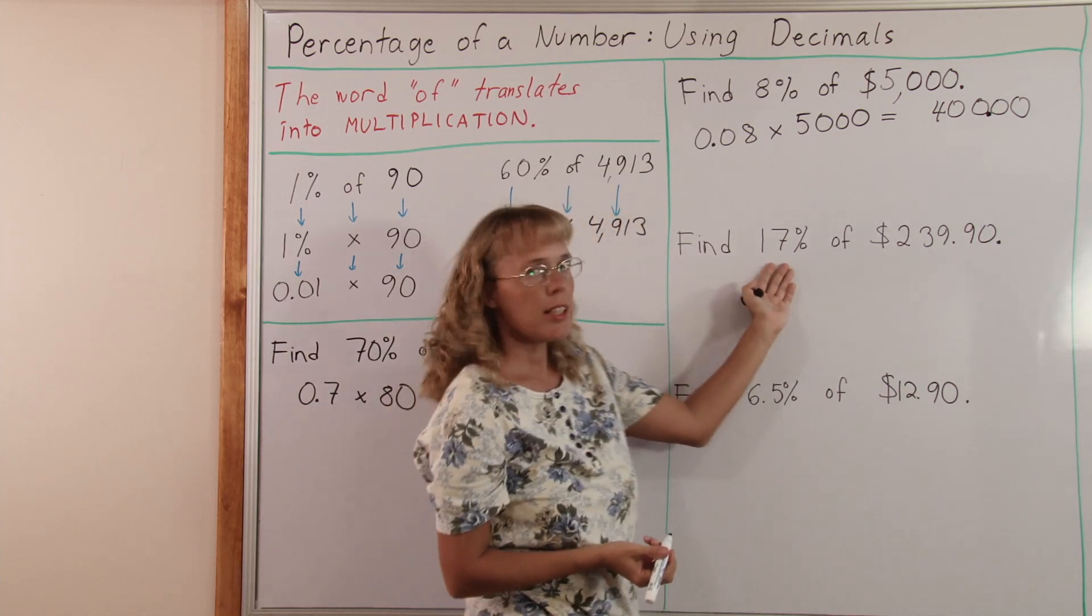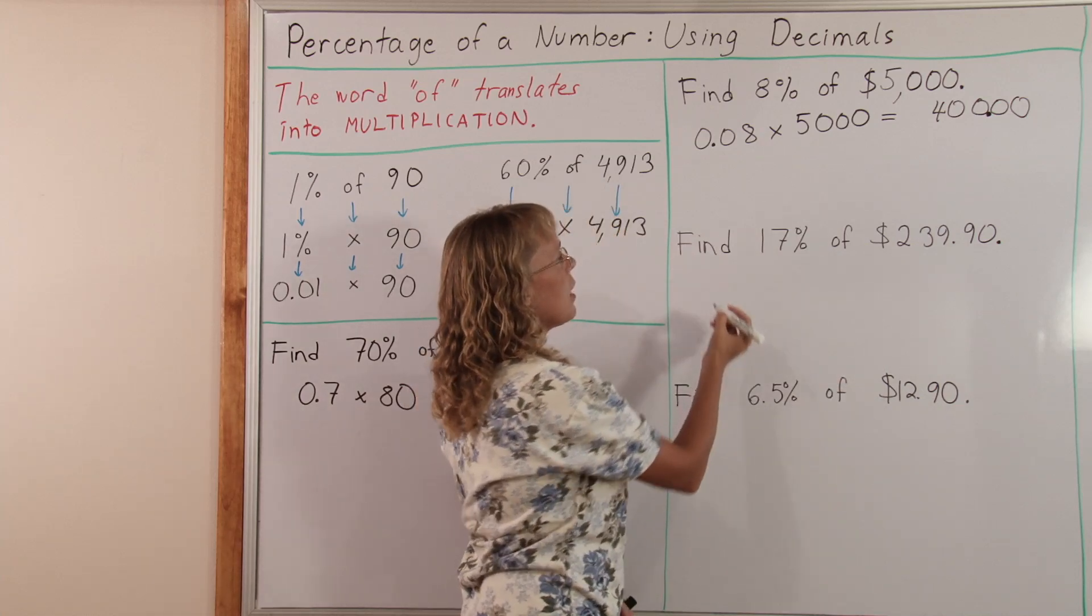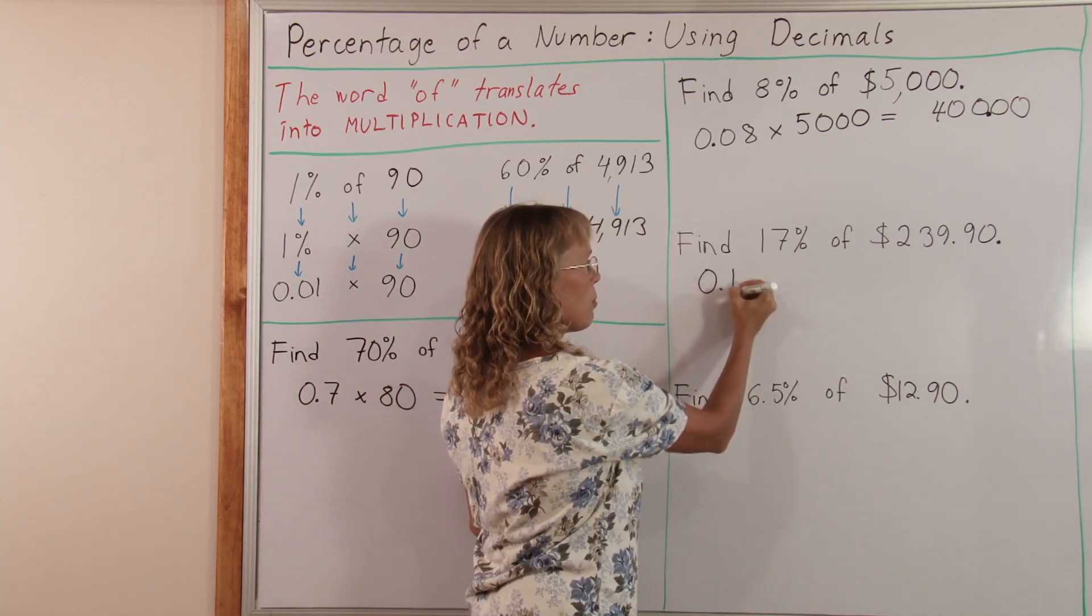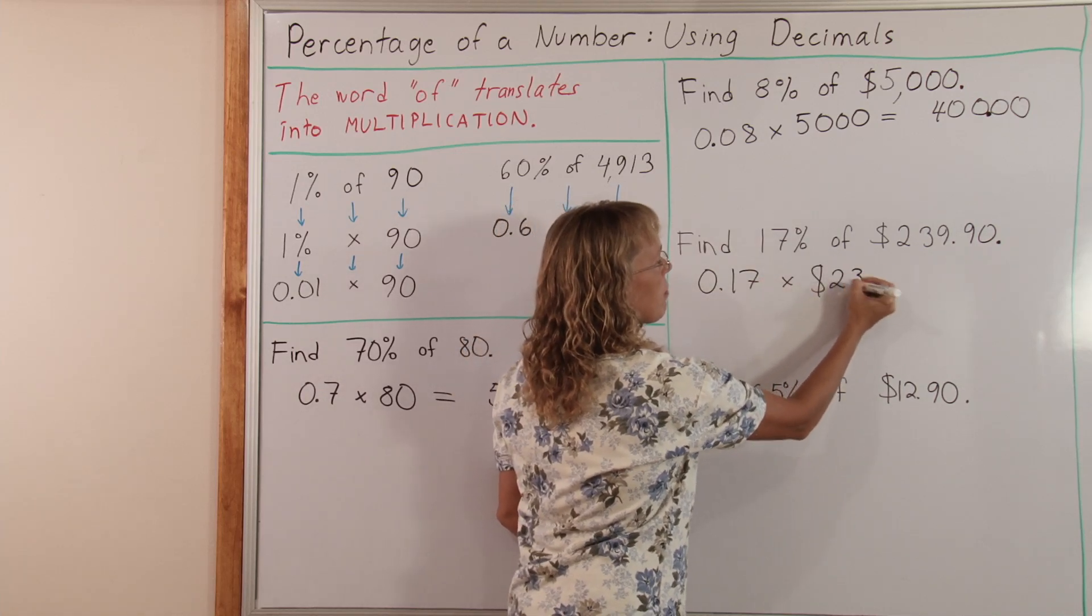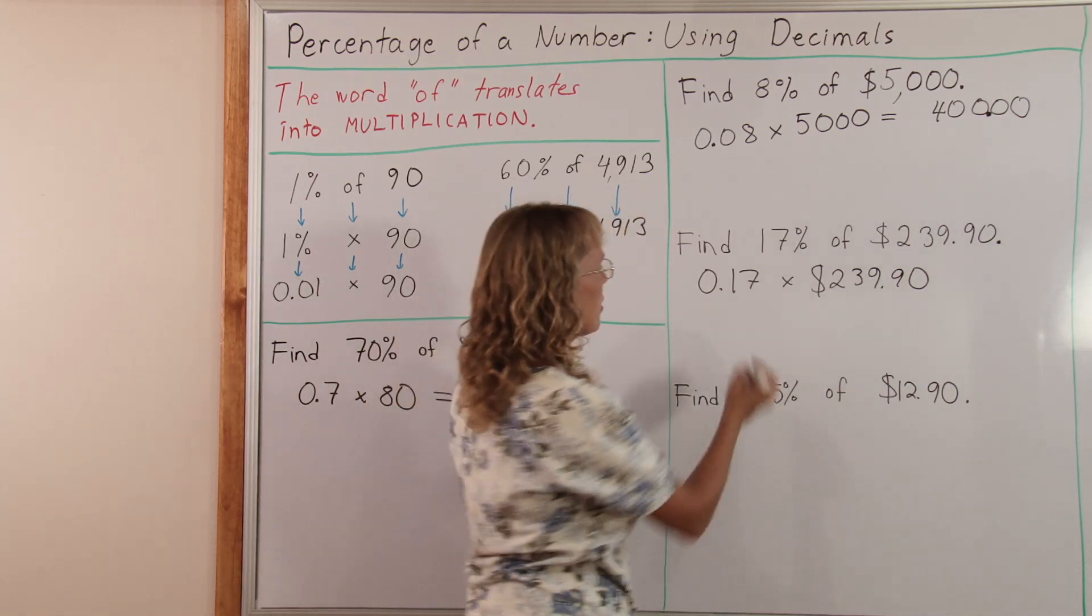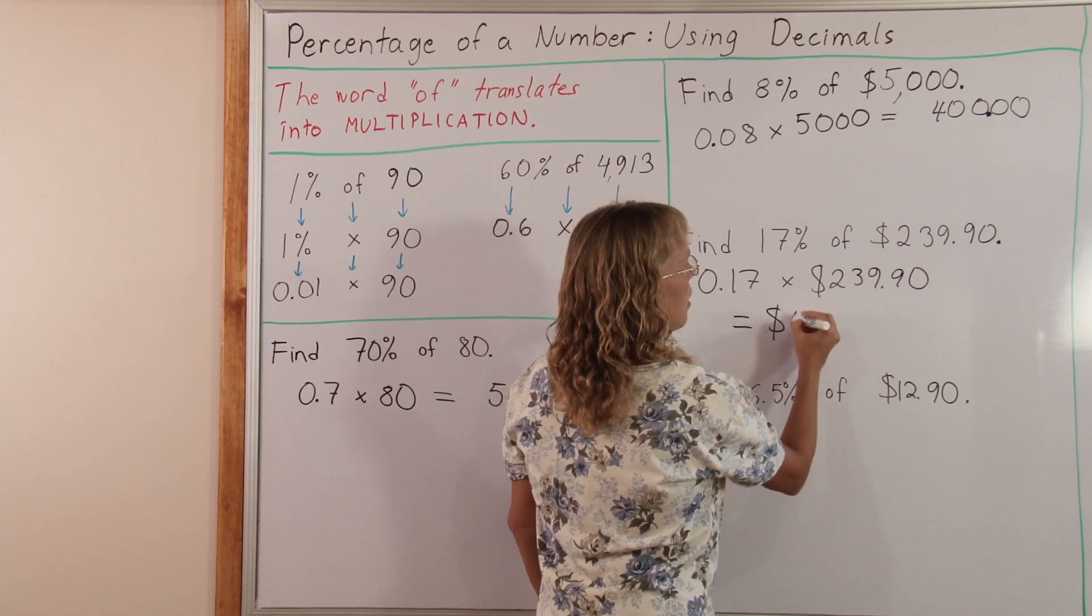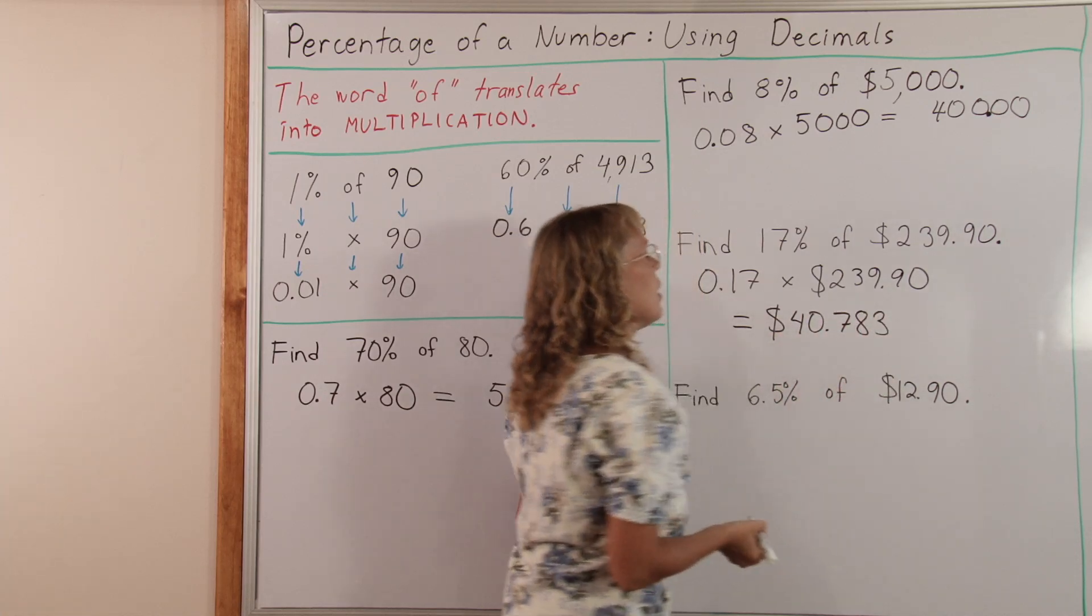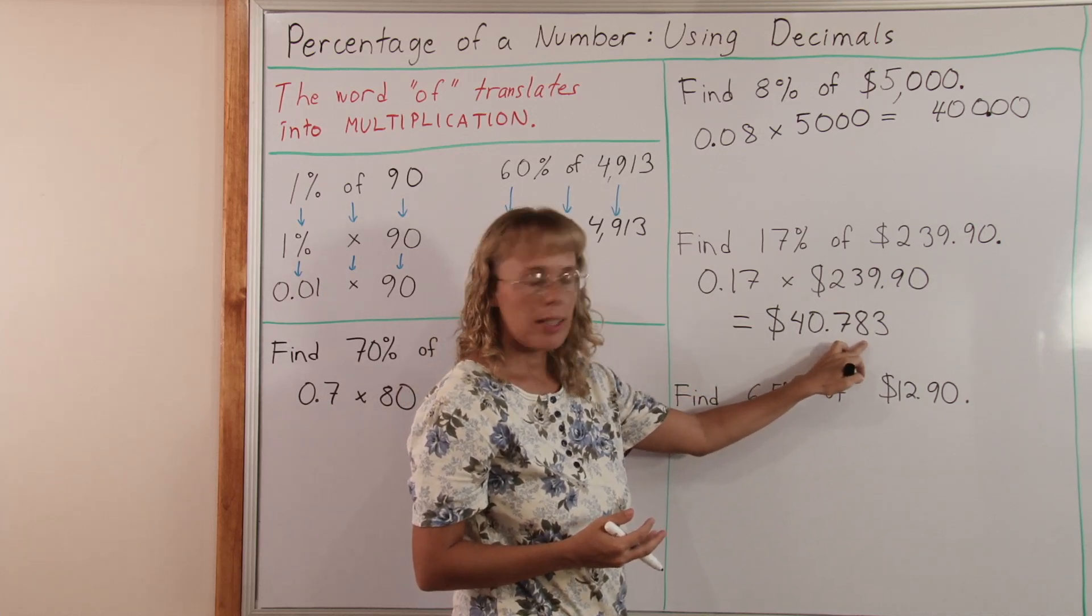Here is find 17% of $239.90. Now I would use a calculator but 17% is written as a decimal. 0.17. Then times. And then this number. And I calculated it beforehand with the calculator. The answer is $40.783. Which this would need to be rounded if it was a price or something. It would need to be rounded to $40.78.